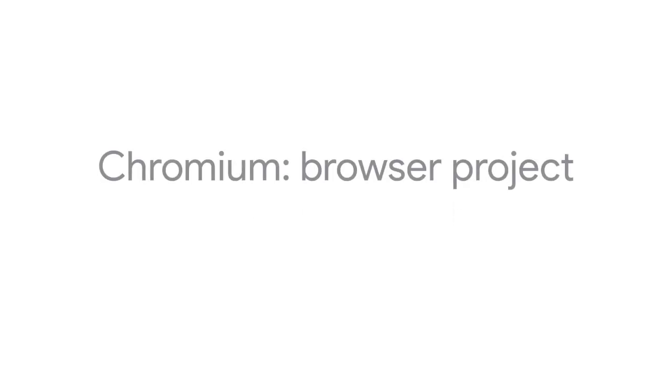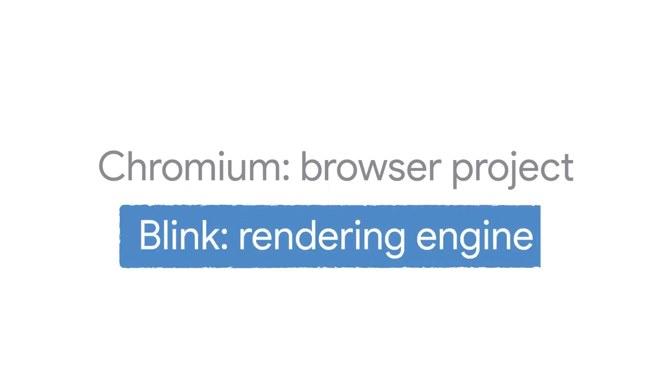You may have heard of Chromium. This is the open source browser project on which Chrome and some other browsers and frameworks are built. And Blink is the rendering engine used by Chromium. For a new feature to land in Blink, it needs to go through the Chromium project's open development process.